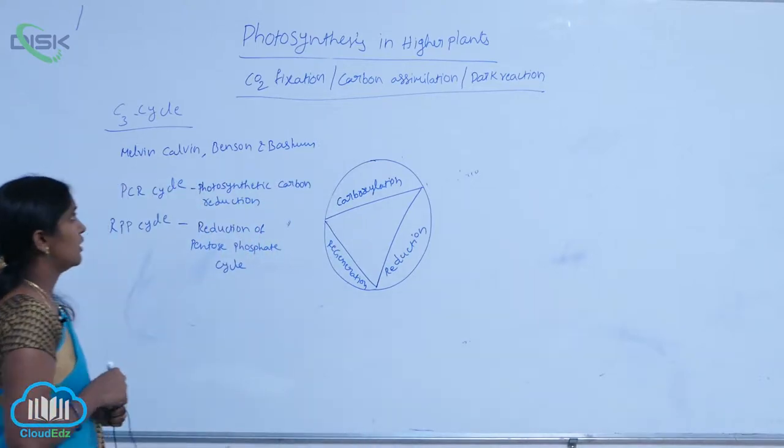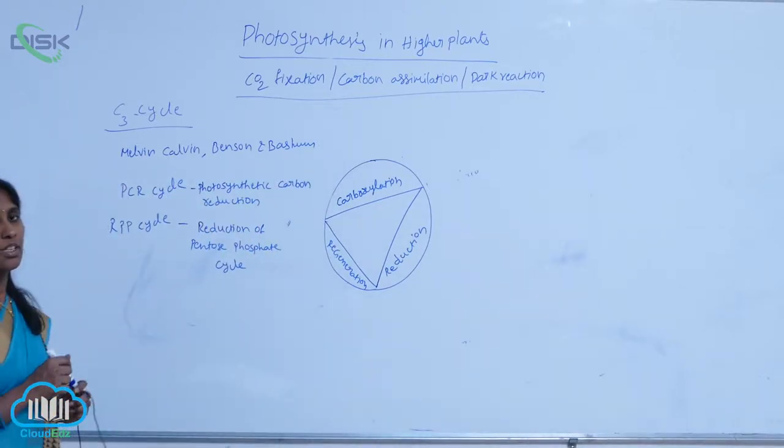The C3 cycle steps were proposed by three scientists: Melvin Calvin,